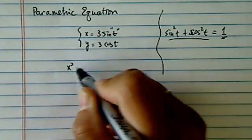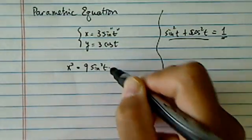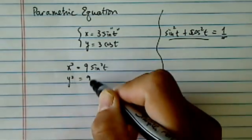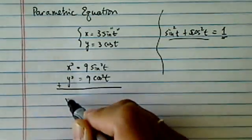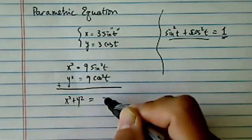So let's square the first one, and we have 9 sine t squared. Square the second one, and we have cosine t squared. If we add those two together, we have x squared plus y squared equal to 9.